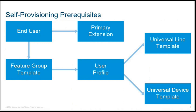In self-provisioning, first the primary extension is required. You need to create an end user and make sure that a feature group template is in place. For the user profile, two things are required: a universal line template and a universal device template. These are the prerequisites for self-provisioning: end user information, primary DN or primary extension, feature group template, and user profile — which requires a line template and a device template.